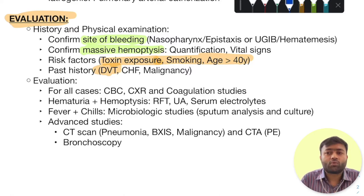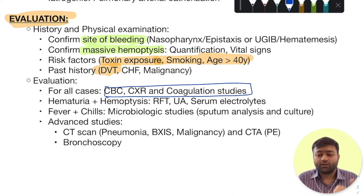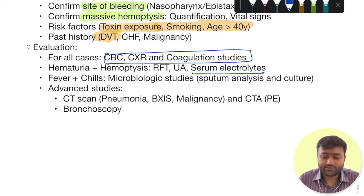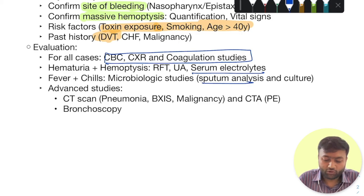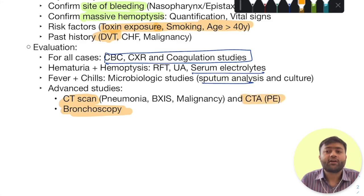Evaluation in every patient must include a complete blood count, chest X-ray, and coagulation studies. If you are suspecting a pulmonary-renal syndrome due to combined presentation of hematuria and hemoptysis, go with renal function testing, urinalysis, and serum electrolytes. If you are suspecting an infectious etiology, cultures are very important — sputum analysis and sputum cytology will be very helpful. Advanced studies in higher centers include CT scan, bronchoscopy, and CT angiography for pulmonary embolism, used to localize mass lesions, look for interstitial lung disease, and confirm bronchiectasis.